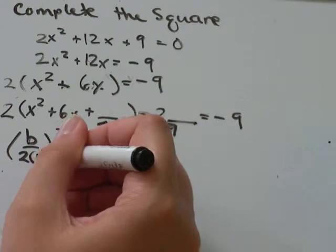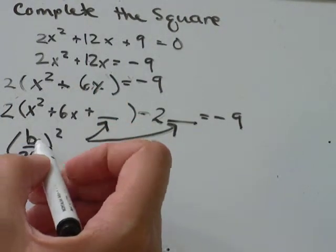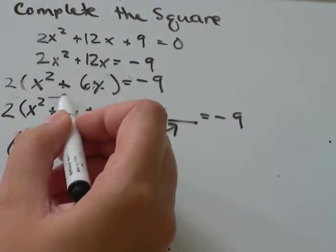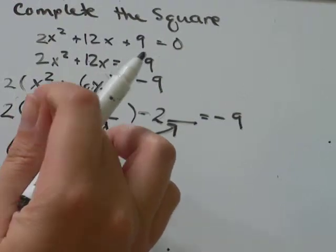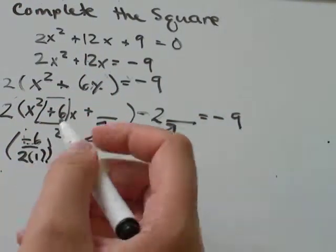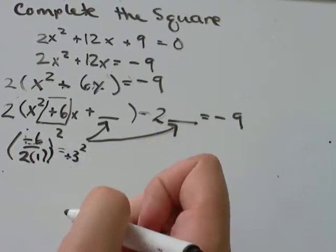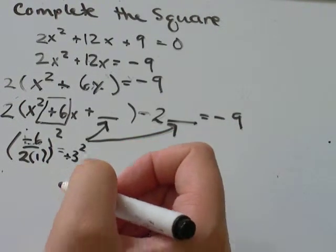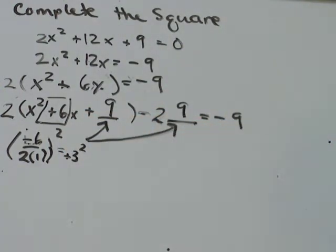It always is. If your a isn't 1, something's gone wrong. b is the coefficient on x. So in this case, b is positive 6. Sign matters. So 6 divided by 2 would be 3. And positive 3 squared would be 9. So 9 goes in this blank, and 9 goes in this blank.